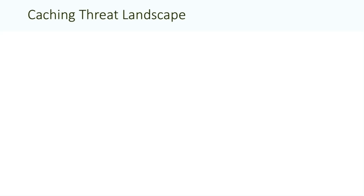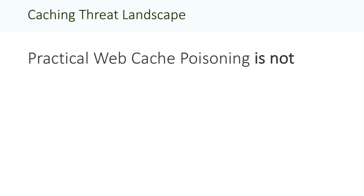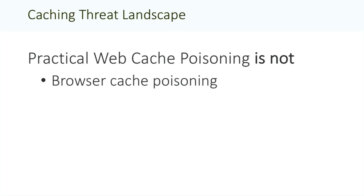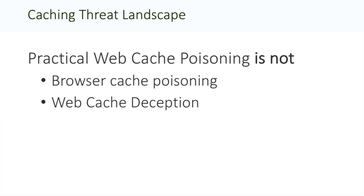First of all, a bit of context as to this presentation. I'm not going to be talking about browser cache poisoning. Browsers have built-in caches — these are client-side caches, and from a security point of view, they're not that interesting. I'm talking about server-side caches. Also, web cache poisoning is not web cache deception. Web cache deception is a really cool technique — there was a presentation on it last year — and it's about tricking caches into storing sensitive information belonging to users so that the attacker can get access to it. Web cache poisoning is about using caches to save malicious payloads so those payloads get served up to other users. So it's kind of related, but the inverse, and the way you exploit them and find them is completely different.